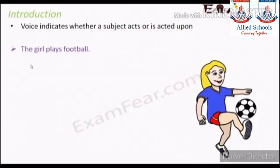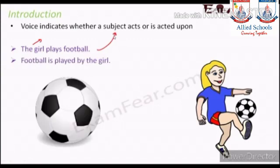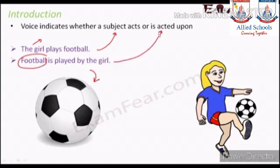Another example: 'The girl plays football.' The girl is the subject, 'plays' is the verb, and football is the object. To make the passive, we put 'football' first, then the helping verb, then the third form of 'play' which is 'played,' then 'by,' and then the subject — 'the girl' — at the end.